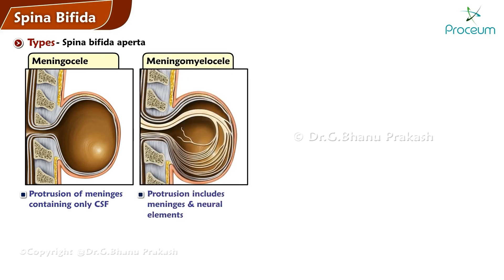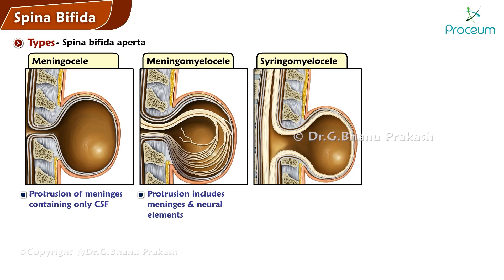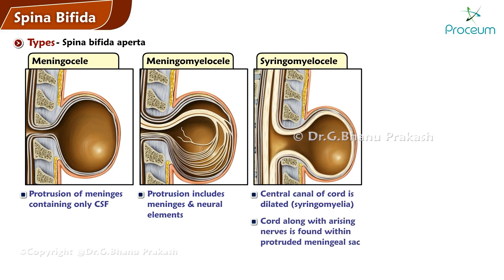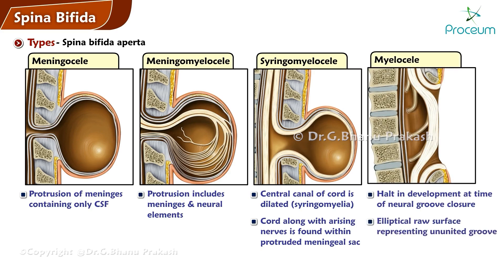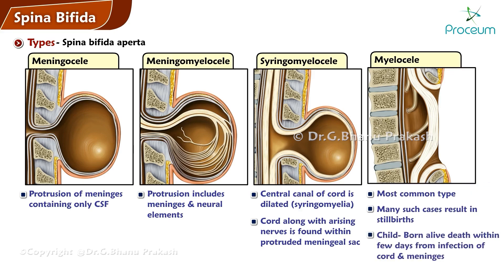Meningomyelocele involves protrusion of the meninges as well as some neural elements. In syringomyelocele, the central canal of the cord is dilated (syringomyelia), and the cord along with the arising nerves is found within the protruded meningeal sac. Myelocele results from a halt in development at the time of neural groove closure; an elliptical raw surface representing the ununited groove is seen. Apart from spina bifida occulta, myelocele is the most common type of spina bifida, although many such cases result in stillbirths. If the child is born alive, death usually occurs within a few days from infection of the cord and meninges.